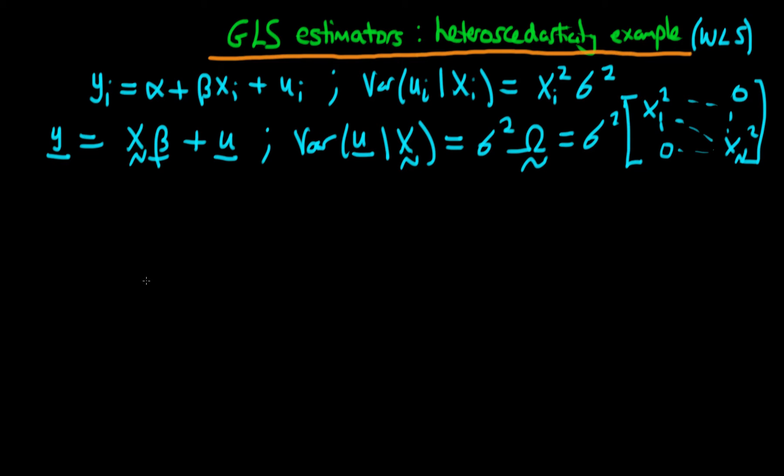Now what we can do is we can actually derive the form of the transformation, because remember the first stage of GLS is actually transformation. And the transformation matrix is given by omega to the power minus a half. And omega to the power minus a half here is actually quite simple, because omega itself is a diagonal matrix.